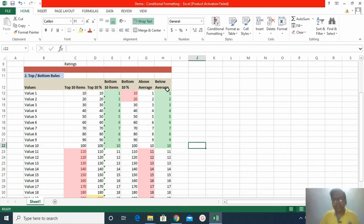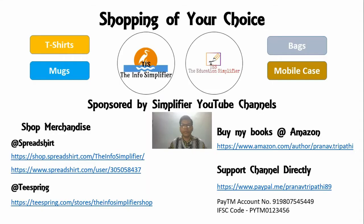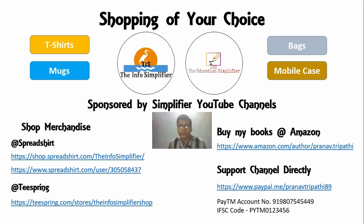Thanks for being patient throughout this session. There is a video at the end promoting some of my merchandise, so please watch till the end. You can support my YouTube channels — The Info Simplifier and The Education Simplifier — by shopping merchandise such as t-shirts, mugs, bags, and mobile cases on spreadshirt.com or tspring.com, buying books on Amazon, or supporting the channel directly via PayPal for international payments or BTM for Indian payments. All links are in the description box of each of my videos.